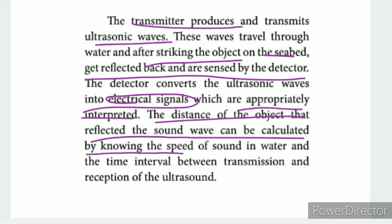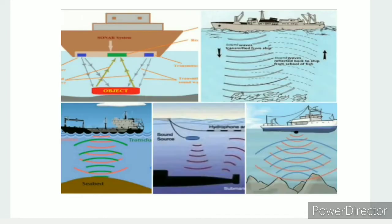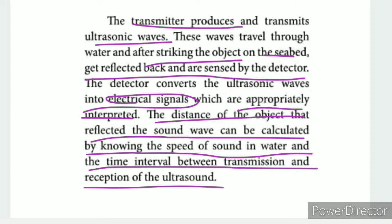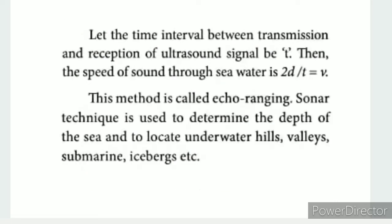The distance of the object that reflected the sound wave can be calculated by knowing the speed of sound in water and the time interval between the transmission and reception of the sound. The distance is found out using the known time and velocity. The formula is: distance equals speed multiplied by time. The distance between the ship and the object is represented as 2d, accounting for the two-way travel of the signal.